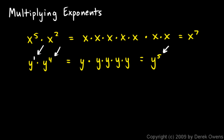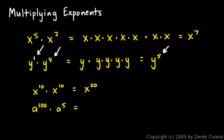If you understand that pattern, you can do these relatively quickly. x to the 10 times x to the 10 — instead of writing it all out, just look at the exponents: 10 and 10, same base x, so just add the exponents: x to the 20. Or a to the 100 times a to the 5 — the 100 and the 5 add up to 105, so the answer is a to the power of 105.